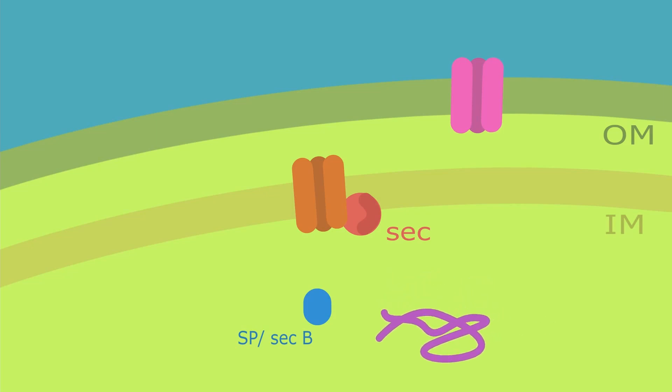The protein will first bind to the SP protein or also known as the sec B and thereafter the sec B will transport the protein to the sec complex that is closely bound to the inner membrane transport channel.